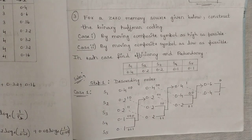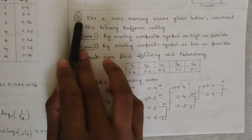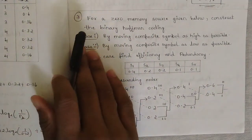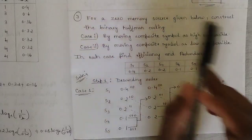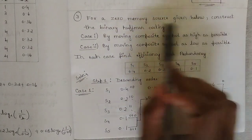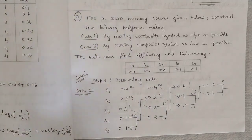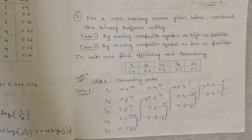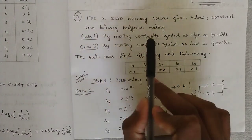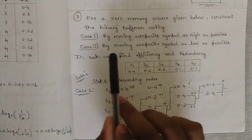In this video I am also going to solve two different kinds of Huffman coding problems that have a high chance of being asked in the exam. So the question number three — the first problem of this video — is: for a given zero memory source, construct the binary Huffman coding for two given cases. Case one: by moving the composite symbol as high as possible. Case two: by moving the composite symbol as low as possible.